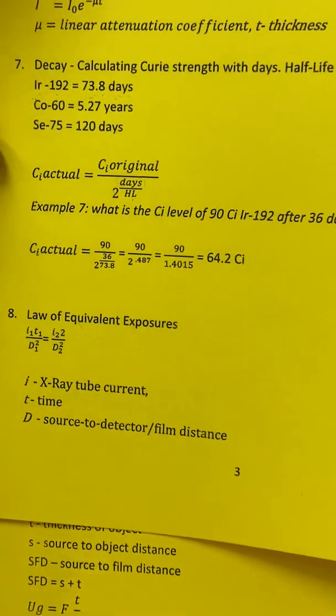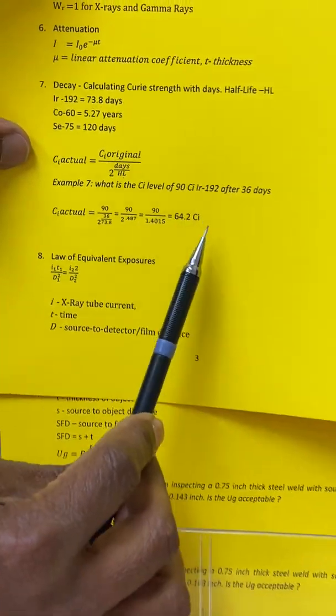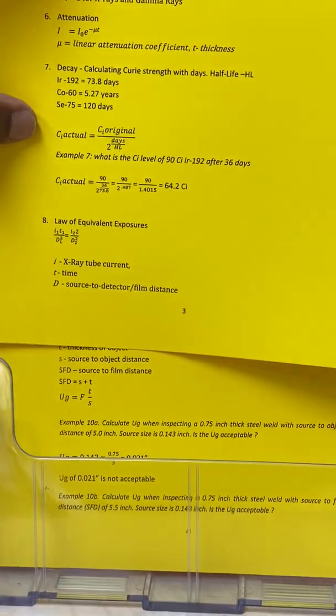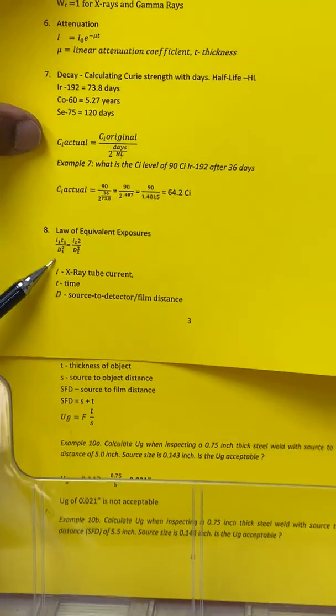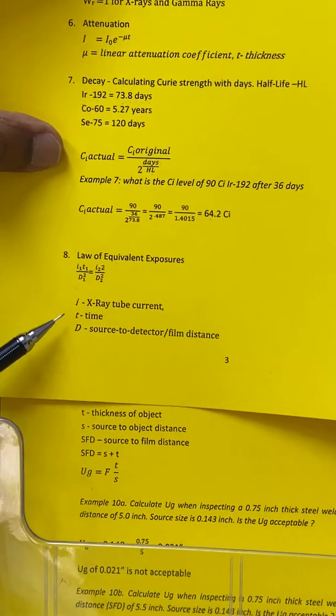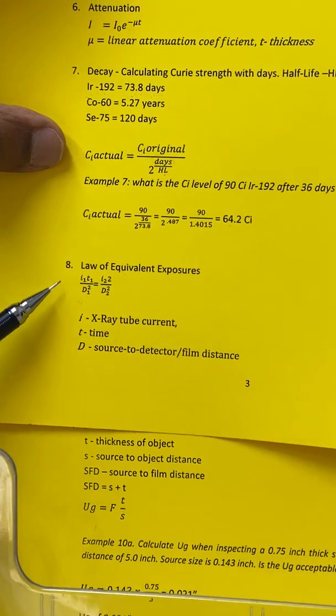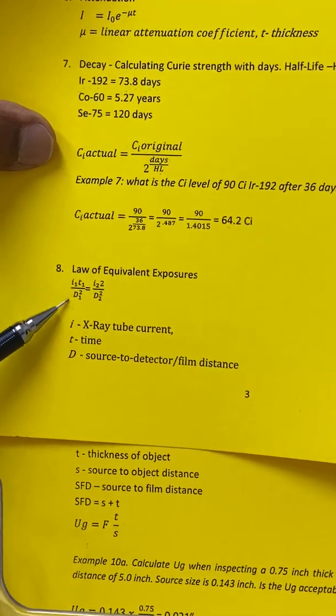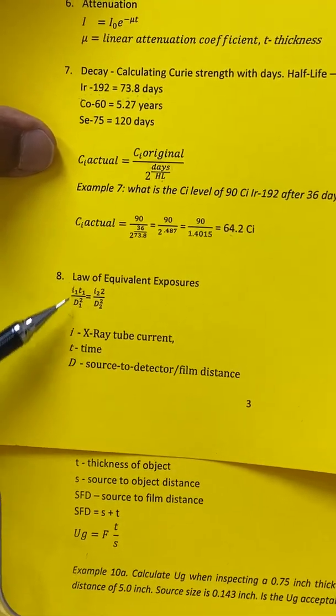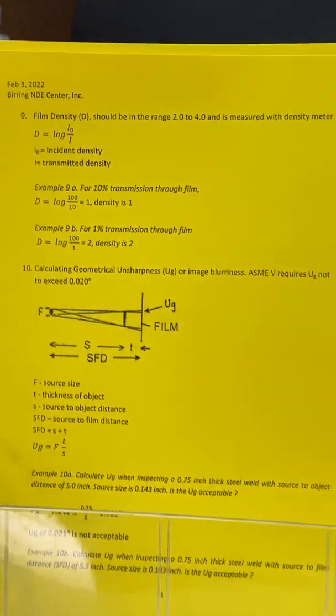This is the formula for law of equivalent exposures used in x-ray radiography if you want to adjust the distance and the exposure time. You use this formula.